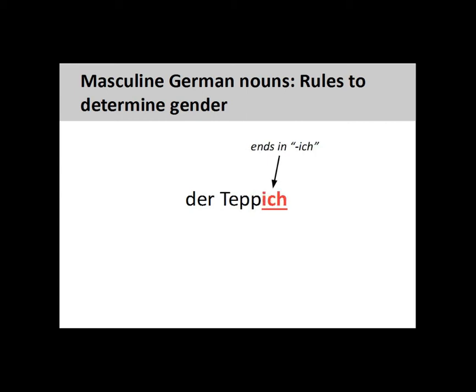Nouns ending in -ICH, such as 'Teppich' (rug or carpet), are masculine.